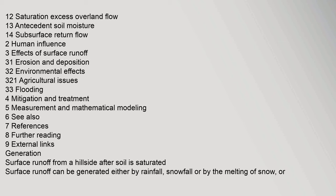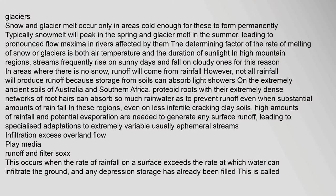Surface runoff can be generated either by rainfall, snowfall, or by the melting of snow or glaciers. Snow and glacier melt occur only in areas cold enough for these to form permanently. Typically snowmelt will peak in the spring and glacier melt in the summer, leading to pronounced flow maxima in rivers affected by them.